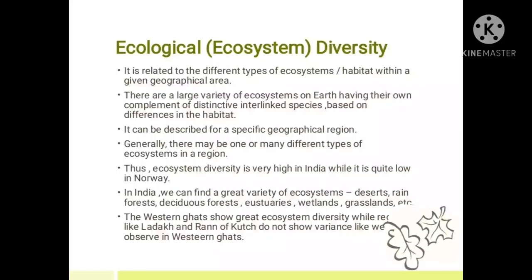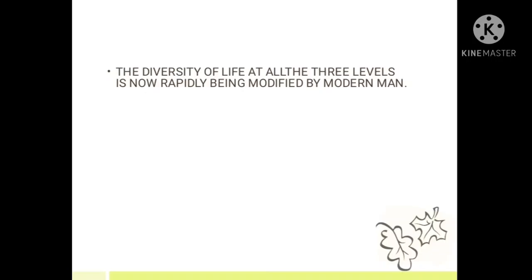In India we can find a great variety of ecosystems, for example desert, rainforest, deciduous forest, fisheries, wasteland, wetlands, grasslands, etc. The Western Ghats show great ecosystem diversity while regions like Ladakh and Rann of Kutch do not show the same variance. This means the diversity of life at all levels is now rapidly being modified by modern humans.